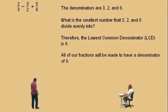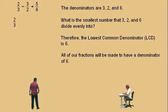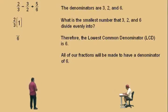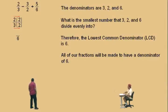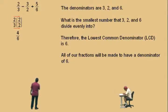All of our fractions can be written with a denominator of six. We have two-thirds, and we're going to write it as a fraction with a denominator of six. We're going to multiply two-thirds by one, but one is going to be written as a fraction. Charlie, three times what is six? Two. So if we multiply the denominator by two, we must multiply the numerator by two. We multiply straight across the top and straight across the bottom — two times two is four, and three times two is six. So two-thirds is actually four-sixths.